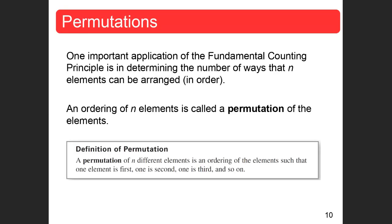Permutations. One important application of the fundamental counting principle is determining the number of ways that n elements can be arranged in some sort of order. An ordering of n elements is called a permutation. The definition: a permutation of n different elements is an ordering of the elements such that one element is first, one is second, one is third, and so on.